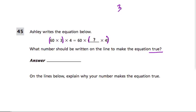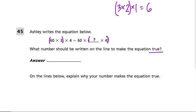Let's say I have the numbers 3 times 2 times 1. What's that equal to? Well, 3 times 2 is 6, and 6 times 1 is still 6. Now notice what I did — I said 3 times 2 first, so I could put parentheses there. In other words, solve those two first, multiply them, then multiply by 1.